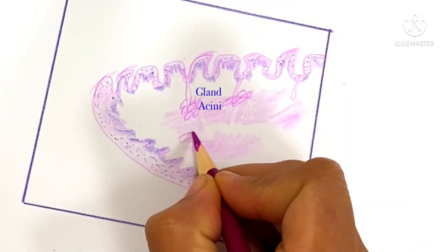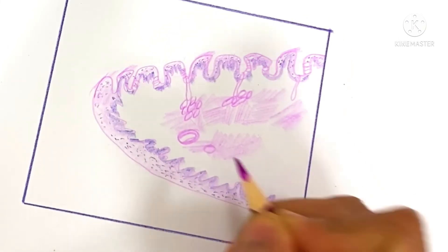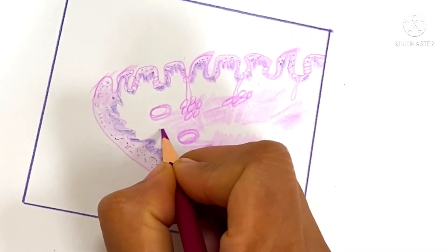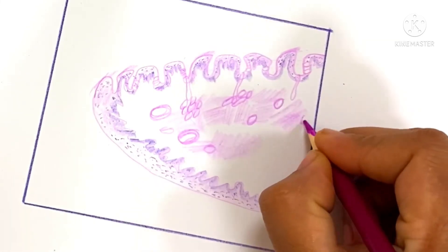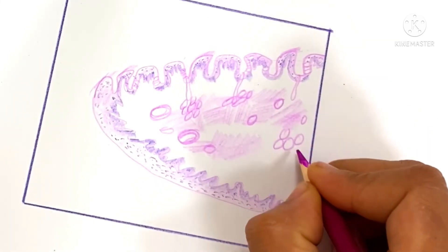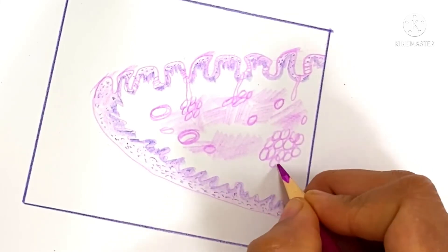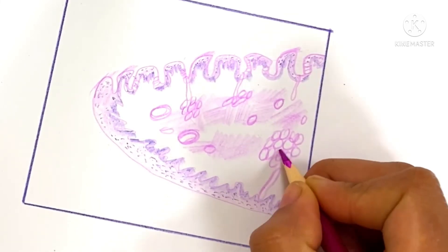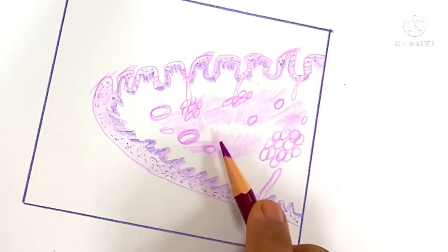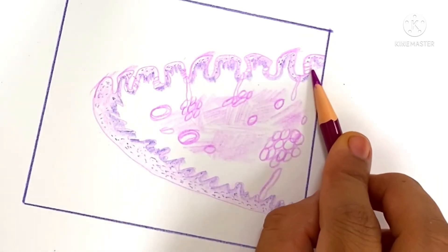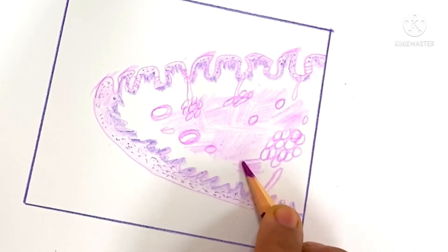Serous and mucous glands are present. In between the muscular tissue, there are arteries, veins, glands, connective tissue, lymphatics, nerves, and adipose tissue.